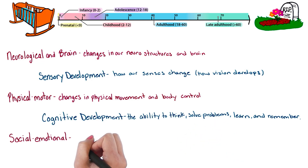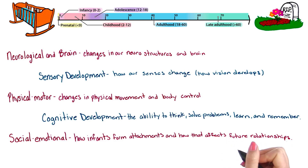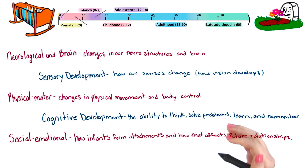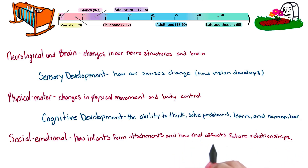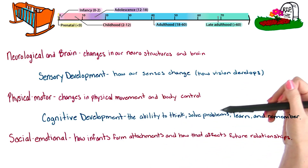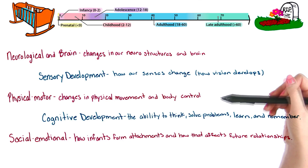And finally, our social and emotional development. This focuses on things like attachment, how infants form attachments, and how those attachments will affect future relationships. These are just some of the aspects developmental psychologists are interested in.